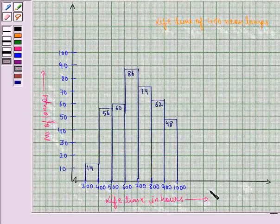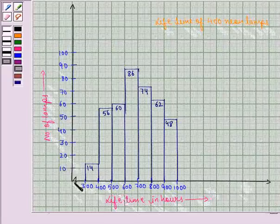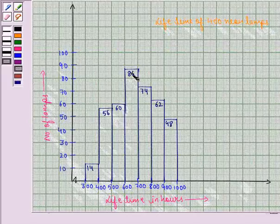So this is the required histogram. Now from here we can see at a glance that 14 lamps have a lifetime of 300 to 400. Similarly here we have 56, 60, 86, 74, 62 and 48 neon lamps have a lifetime of 400 to 500, 500 to 600, 600 to 700, 700 to 800 and so on till 900 to 1000.